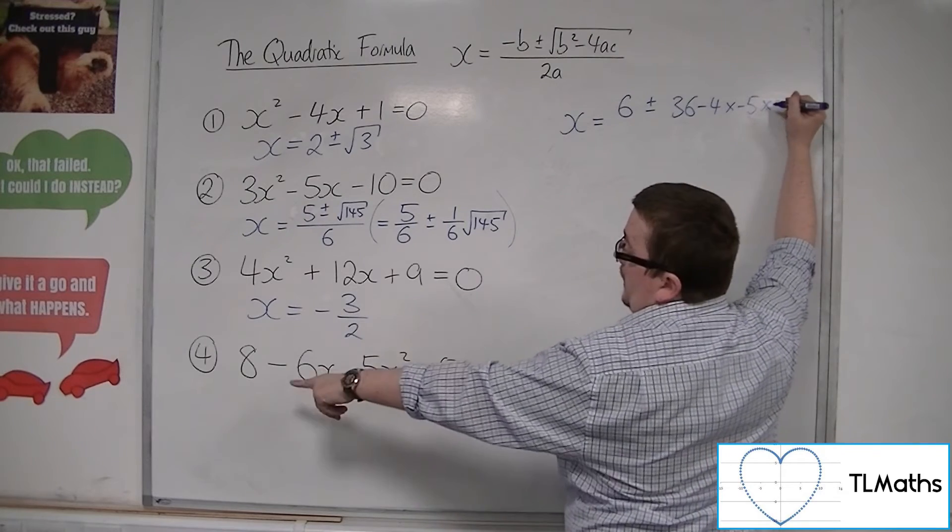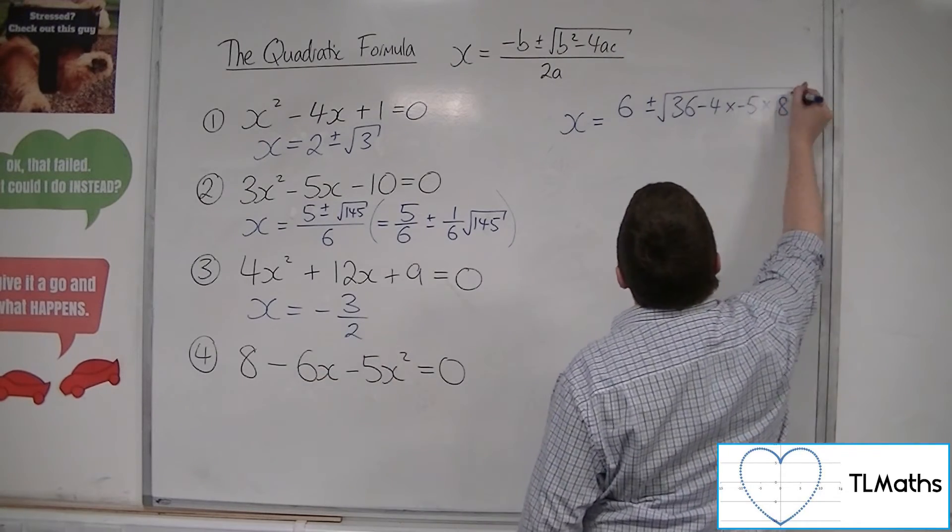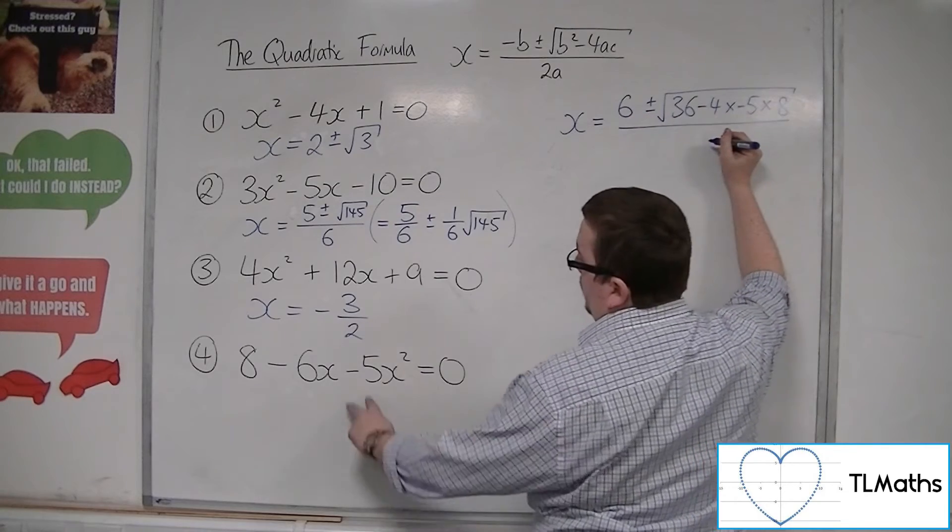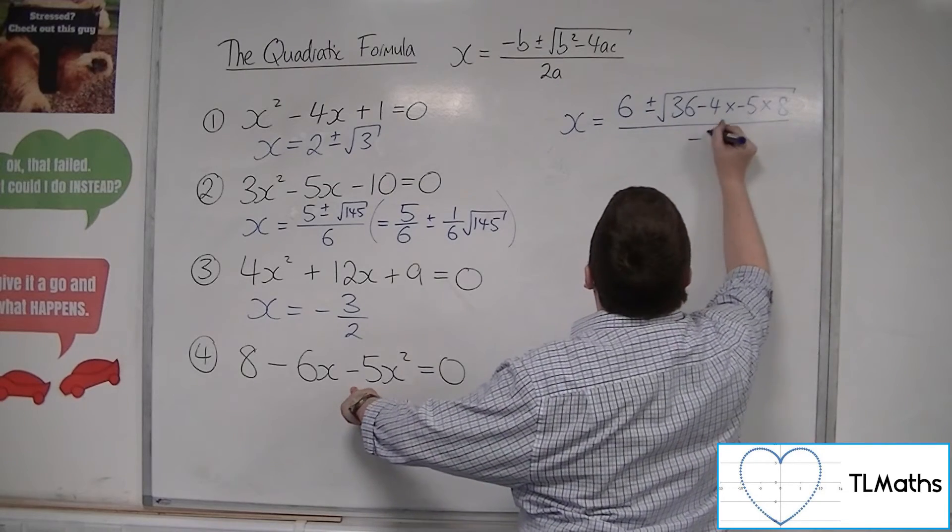Times by c, which is 8, square rooted, all over 2a, so 2 lots of minus 5, so minus 10.